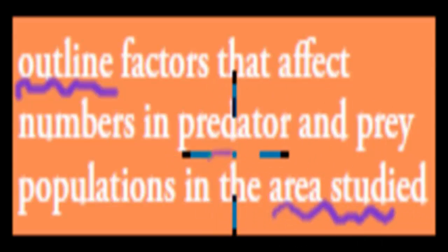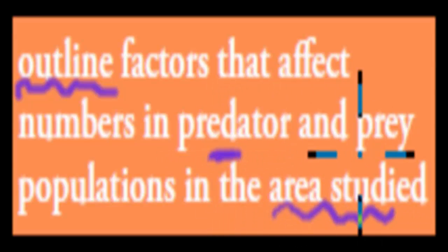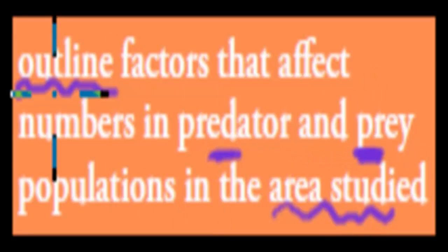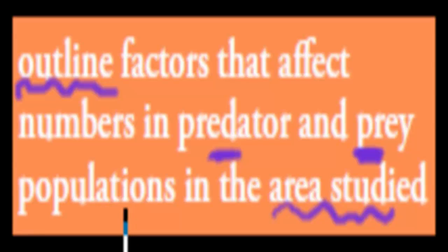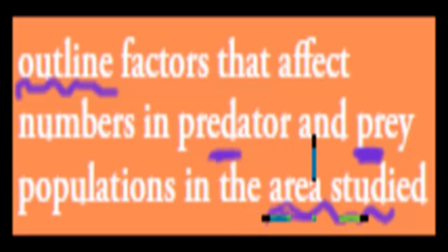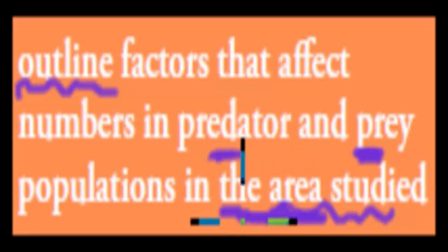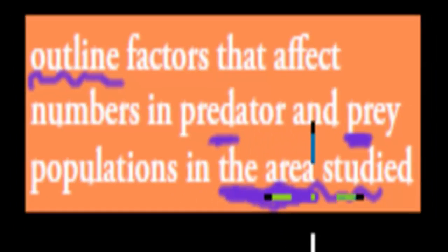So we're going to go over the words predator and prey and what exactly that means. Outline just means we have to give the basic features or basic facts — so basic facts of those factors that affect both predator and prey in any given area, including specific interactions in that area itself.